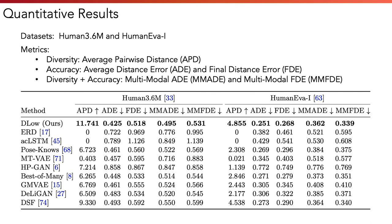Now let's take a look at the quantitative results of DLow. We evaluated on two public human motion datasets, Human 3.6M and HumanEva. We use both diversity and accuracy metrics. We compare against both deterministic and stochastic baselines, as well as diversity-promoting methods for generative models. As demonstrated in the table, our method outperforms the baselines in terms of both sample diversity and accuracy.